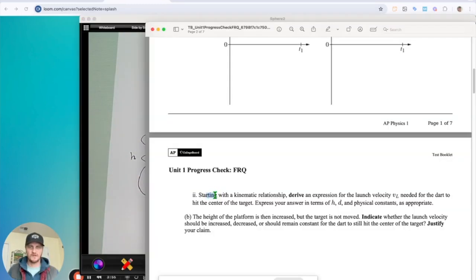All right, part two says start with a kinematic relationship, derive an expression for the launch velocity, VL, needed for the dart to hit the center of the target. And we want to express our answers in terms of H and D. So what I'm writing on the sheet right now is that I've been given H, I've been given D, and then we can also put G because G is negative 9.8 meters per second squared. It's a fundamental constant, and they call it a physical constant here. But what do they want us to find? They want us to find VL.